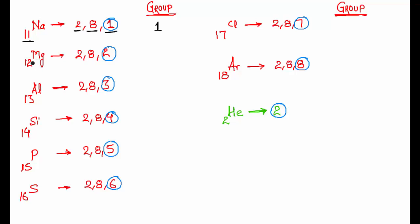For magnesium, atomic number 12, the configuration is 2, 8, 2. In the outermost shell — the third shell — the number of electrons is 2, so its group will be group 2.